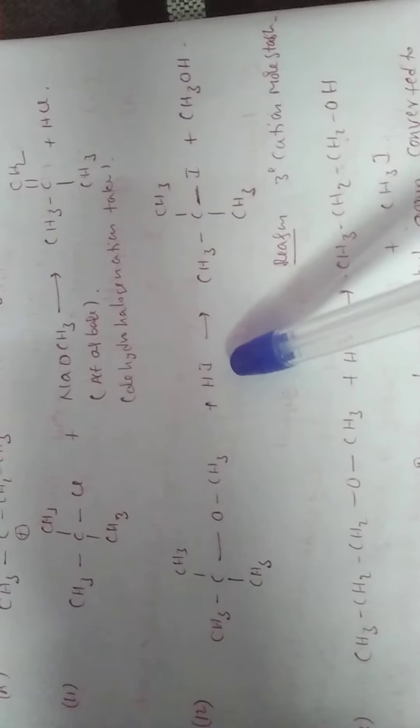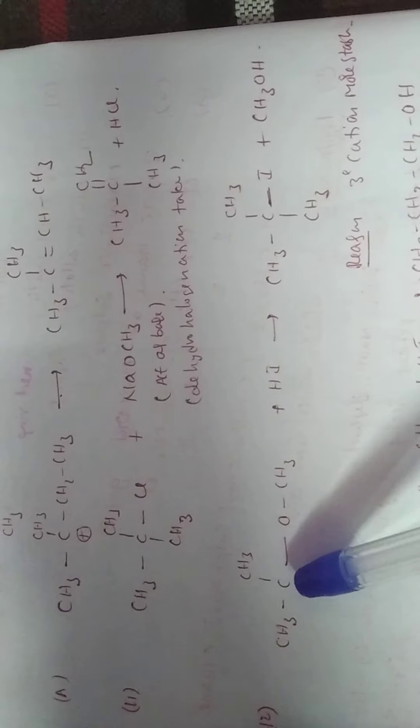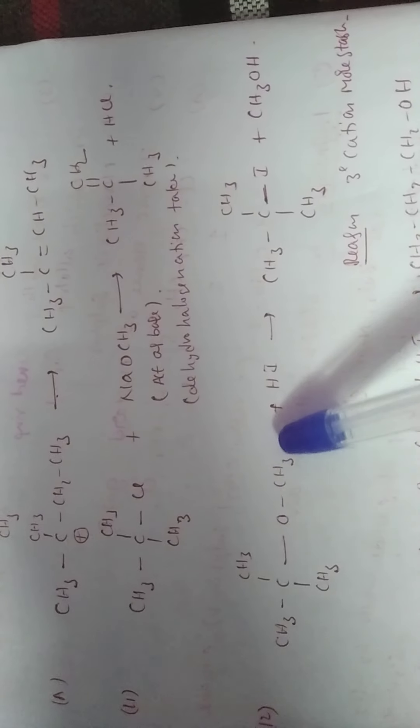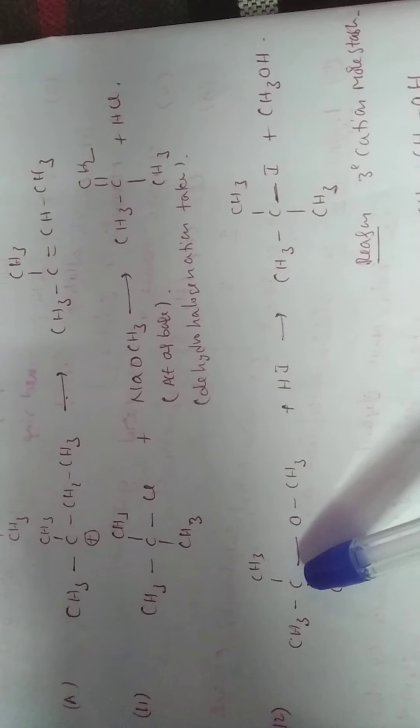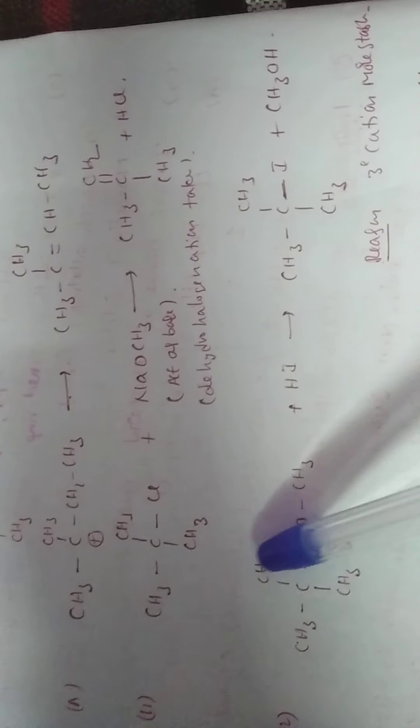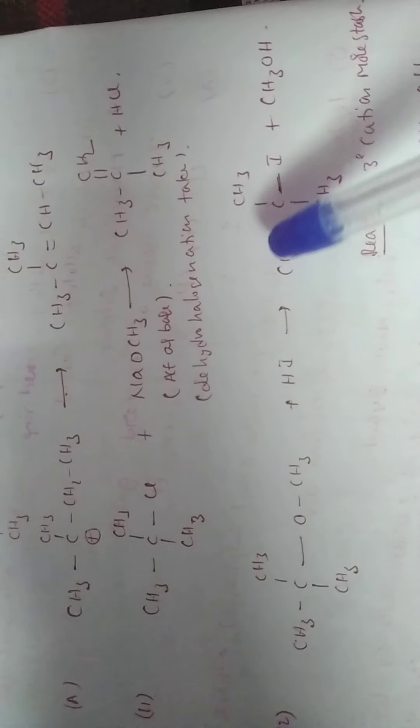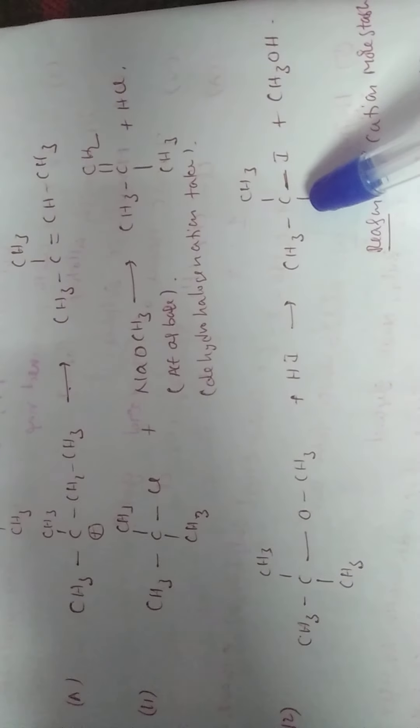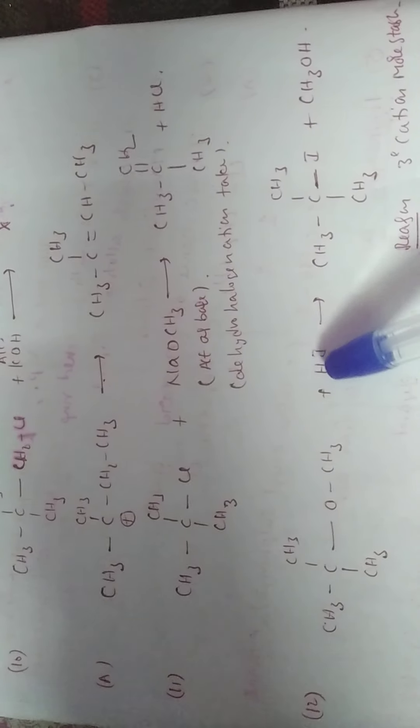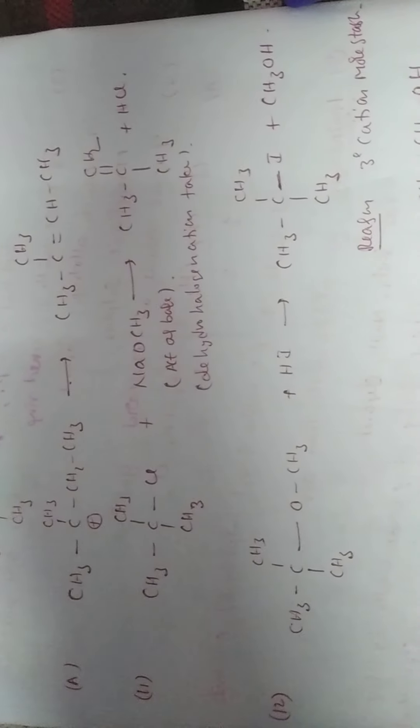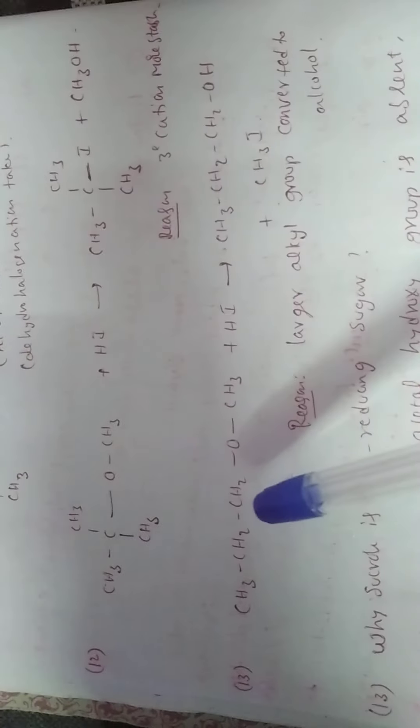Ether which on reaction with HI. OCH3 is removed because it forms tertiary carbonium ion that is more stable. Tertiary carbonium ion combined with I minus. Tertiary butyl iodide is formed. Next, OCH3 minus combined with H plus, methyl alcohol is formed. Reason is tertiary carbonium ion more stable.